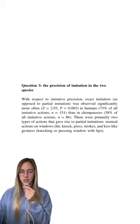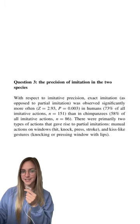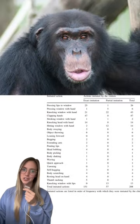Even mapping the precision saying 74% of human actions were high precision and 58% of chimpanzee actions. Key actions were hand clapping, knocking on the window, and kissing gestures.